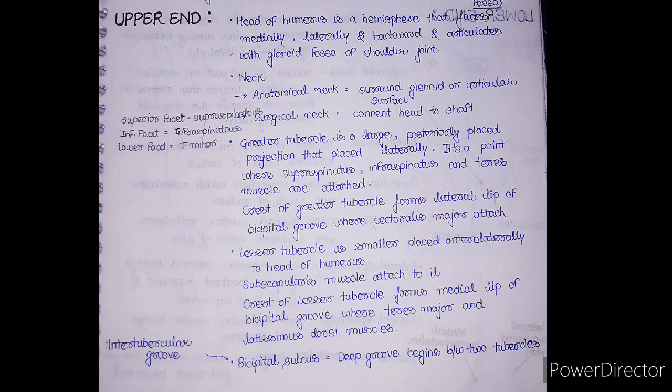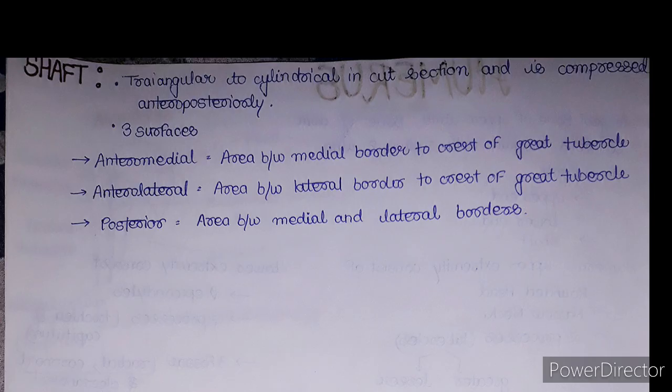On the lesser tubercle, the subscapularis muscle attaches. The lesser tubercle also has a crest, and the crest of the lesser tubercle forms the medial lip of the bicipital groove. Two muscles attach on the medial lip of the bicipital groove: teres major and latissimus dorsi. Don't confuse teres minor — which attaches to the lower facet of the greater tubercle — with teres major, which attaches to the medial lip of the bicipital groove. A helpful mnemonic: greater (tubercle) joins with minor, and lesser (tubercle) joins with major.